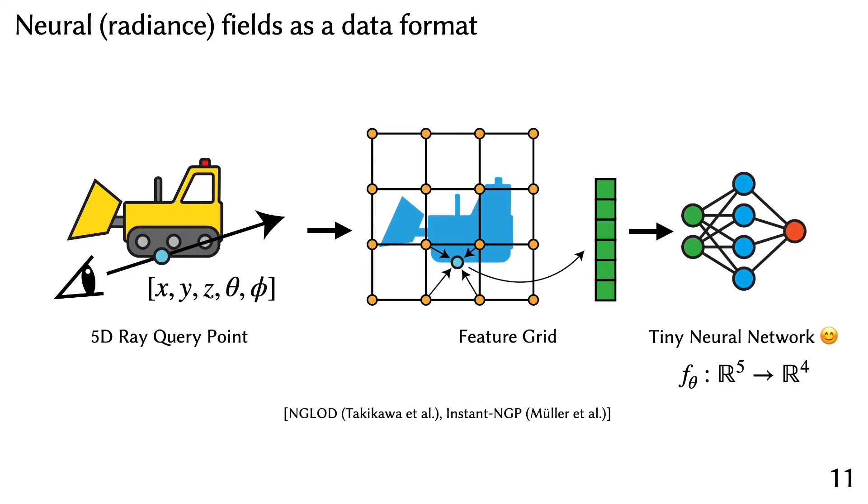There are works which attempt to alleviate this problem by moving the parameters out of the neural network into an auxiliary data structure known as the feature grid. The feature grid stores feature vectors in a spatial data structure from which spatial coordinates are used to interpolate vectors from the grid to be used as an input to a much smaller neural network. This results in a much faster pipeline because tiny neural networks are fast to evaluate, and proper data structure design can make this feature interpolation from a very large structure very fast.